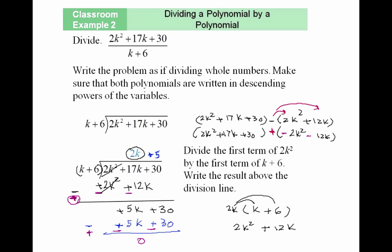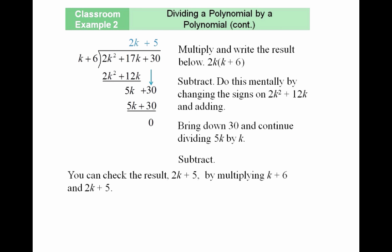Now if the remainder doesn't become 0, then you would write remainder over divisor as your last term. So to summarize: multiply and write the result below, then subtract by changing signs and adding. Bring down the next term and continue dividing. The final result is 2k + 5.